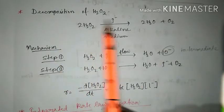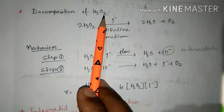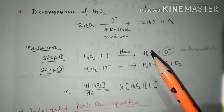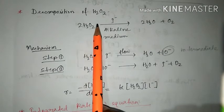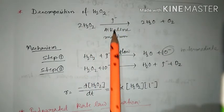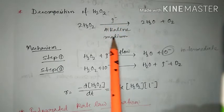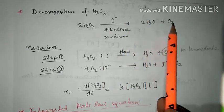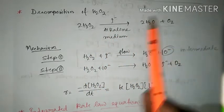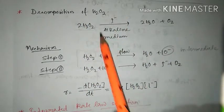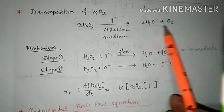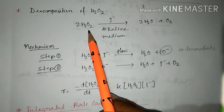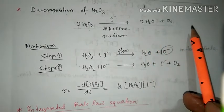Let us take an example of decomposition of hydrogen peroxide, H2O2. Decomposition means fragmentation into more than one part. When two moles of hydrogen peroxide react in the presence of I- (iodide ion) and alkaline medium, it produces two moles of water and one mole of oxygen. This internal conversion from reactant to product is what mechanism explains.